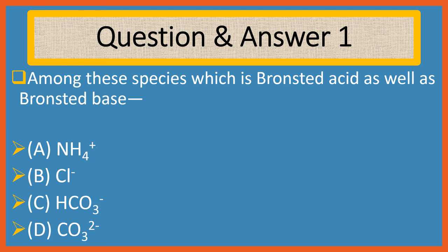Question 1. Among the species, which is a Bronsted acid as well as a Bronsted base? Choices are: A. NH4+, B. Cl-, C. HCO3-, and D. CO3-.